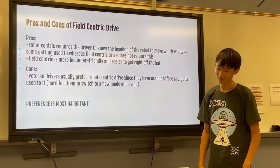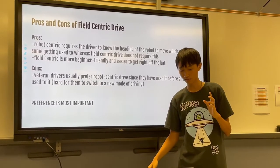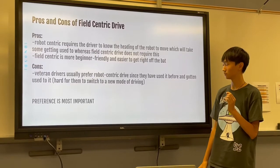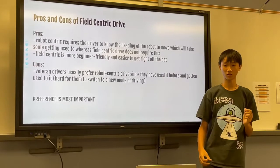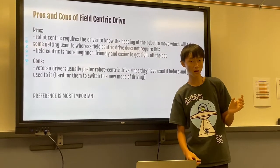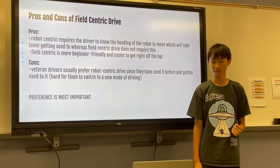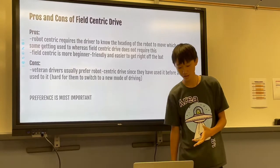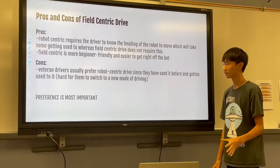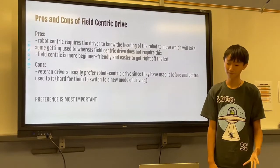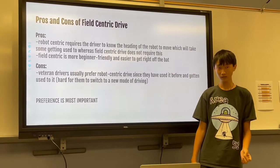That's what field-centric drive is — all directions are absolute and not relative to the robot. Some pros and cons: the main pro is that field-centric drive doesn't require you to know the heading of the robot, whereas robot-centric drive does. When you're looking at the field, you don't need to know which way the robot is oriented to drive correctly. It's also a lot more beginner-friendly and easier to control right off the bat.